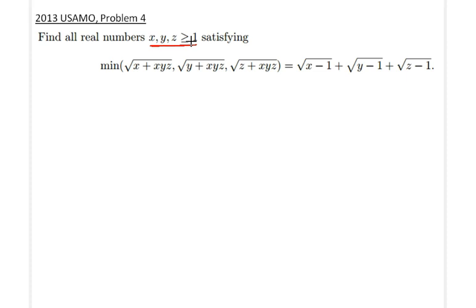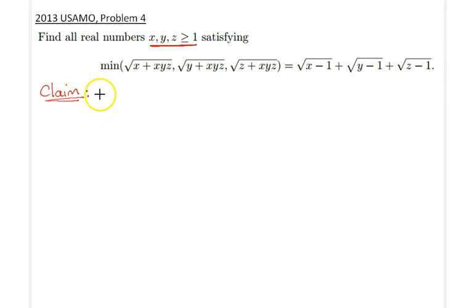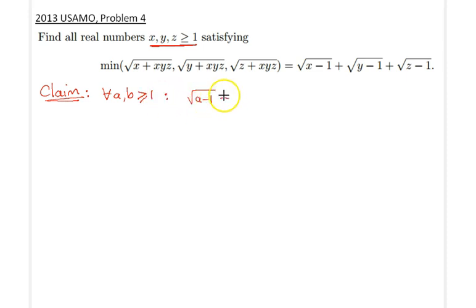I would like to begin with the following claim and prove it, which will significantly simplify the statement and help us solve the problem efficiently. The claim is: for all a and b greater than or equal to 1, we claim that √(a−1) + √(b−1) is less than or equal to √(ab).